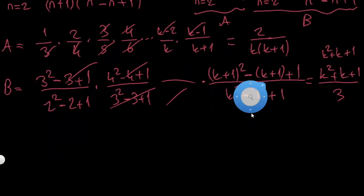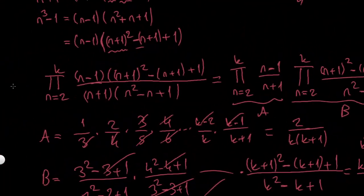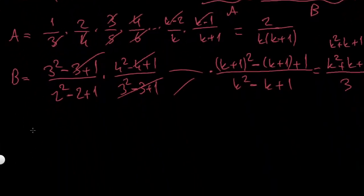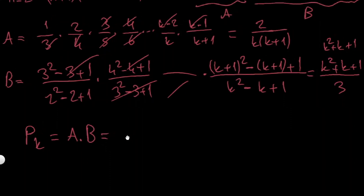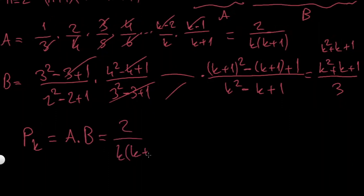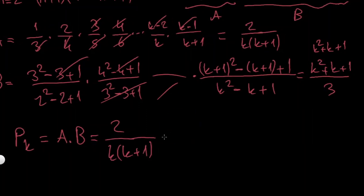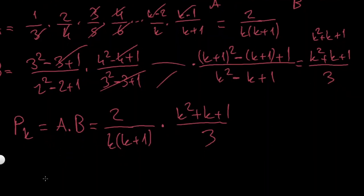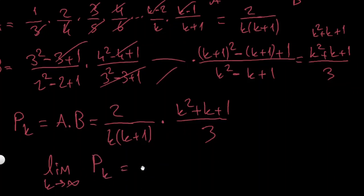Now let's put it together. The finite product P_k = A × B = [2/(k(k+1))] × [(k²+k+1)/3]. Now I take the limit as k→∞ to get the infinite product. The k² terms dominate in numerator and denominator, and the leading coefficients give 2/3.